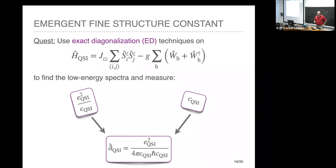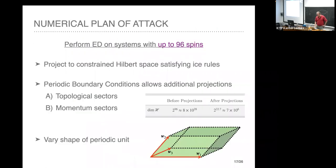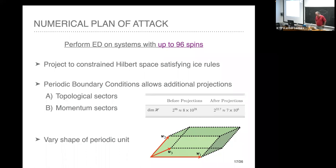The other quantities like the speed of light are dimensionful and change if you, for instance, double the lattice constant, but the fine structure constant remains unchanged. For the numerical plan of attack: the world record for exact diagonalization on spin systems is 50 sites, but we don't need a complete exact diagonalization because we restrict ourselves to the spin ice manifold. Even though that manifold has extensive entropy, it's considerably less than that of free spins, and we were able to do a complete exact diagonalization using up to 96 spins.